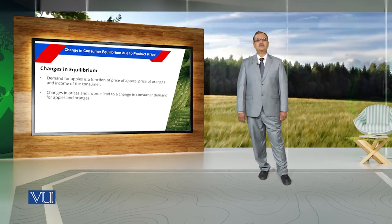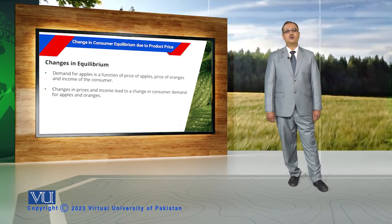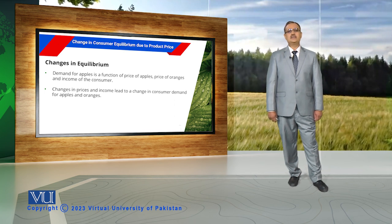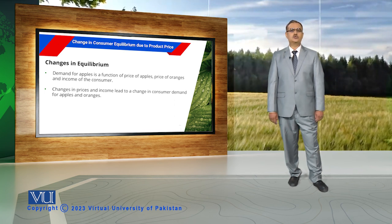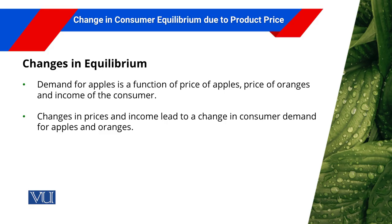Demand for any commodity depends upon prices of commodities being used by a particular consumer and the income of the consumer. Changes in prices of commodities and income lead to a change in the consumer's demand for apples and oranges. Consumers always demand a certain quantity of commodities where they are maximizing their satisfaction.